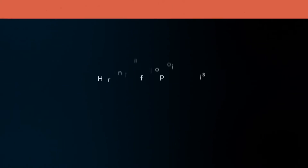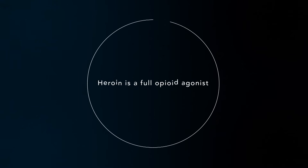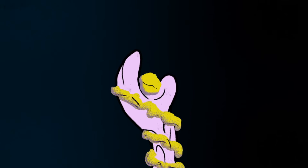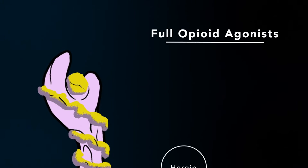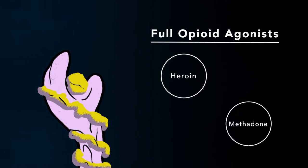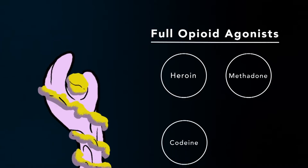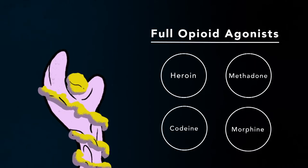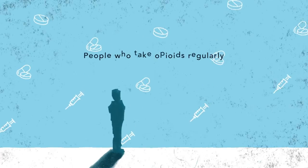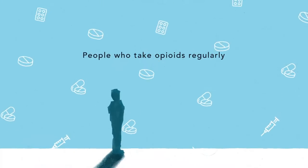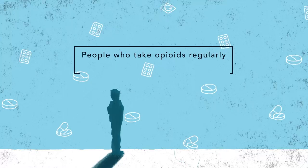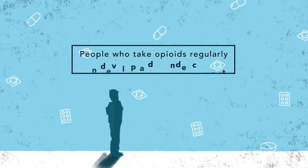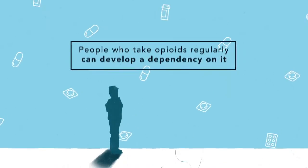Heroin is a full opioid agonist, which means that it binds to and fully activates opioid receptors. Other examples of full opioid agonists include methadone, codeine, and morphine. People who take opioids regularly, whether for medical reasons or illicitly, can develop a dependency on it.